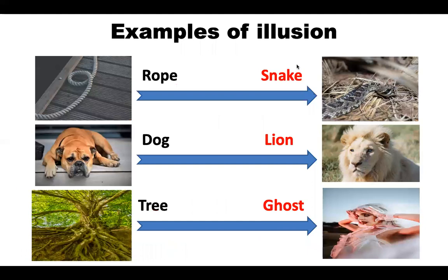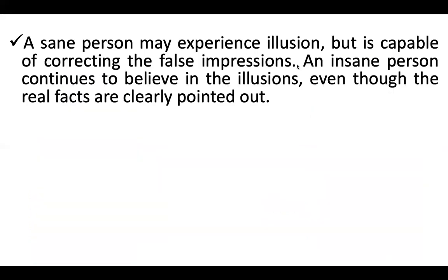Let us see examples of illusion. Where a person perceives snake instead of rope, lion instead of dog, and ghost instead of tree. Hota hai rope aur dikhta hai snake, dog ki jagah dikhta hai lion, aur tree ki jagah dikhta hai ghost.